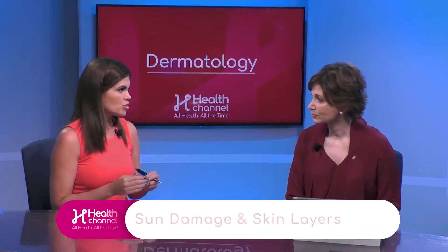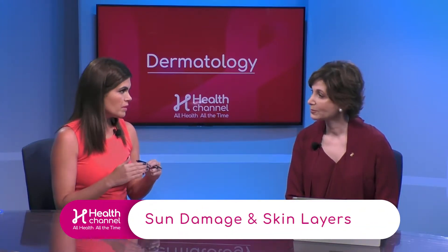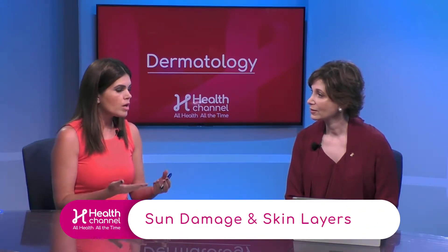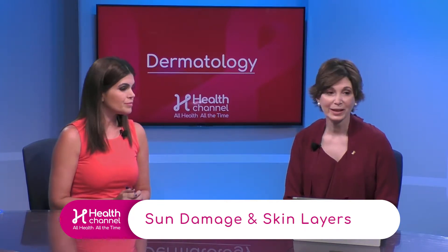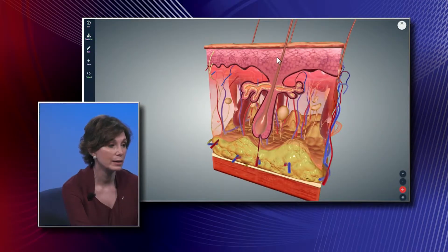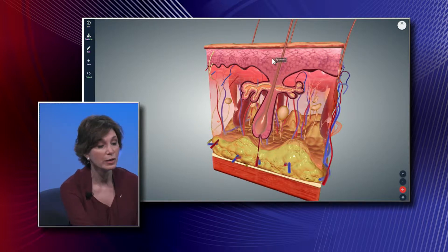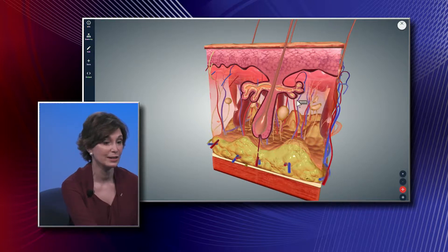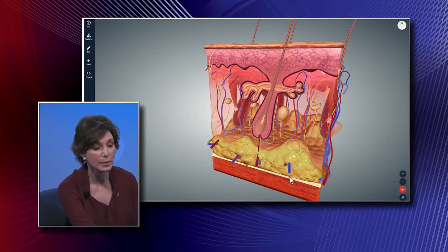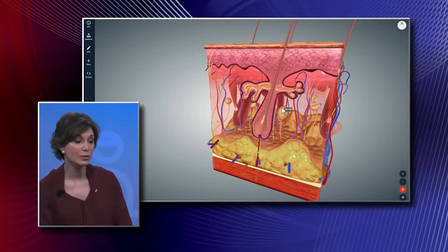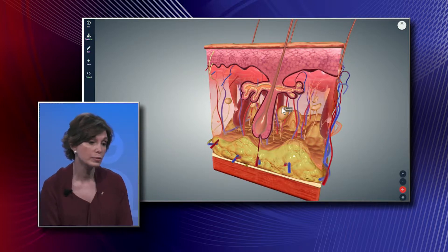Let's start with looking at the layers of our skin, something that's fundamental to understanding sun damage. We have three different layers: the epidermis, the most superficial portion where a lot of skin cancers originate; the dermis, where we have our collagen and elastin that keeps skin looking young; and the deeper layers of fat and muscle beneath the skin. With regard to sun exposure, we really need to think about the epidermis and the dermis.